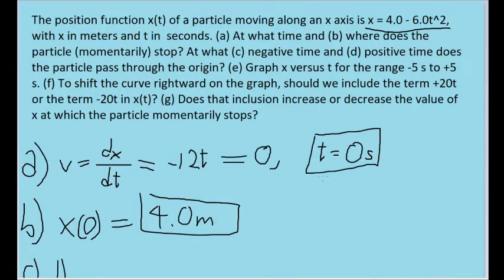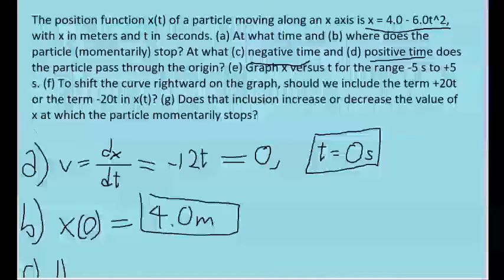Part C and D ask us to find the times at which the particle passes through the origin, hinting that one answer will be negative and one answer will be positive. Now in this case, the word origin is just being used to refer to the t axis, which is where the particle will be when x is equal to zero. So let's take our position function here and set it equal to zero.